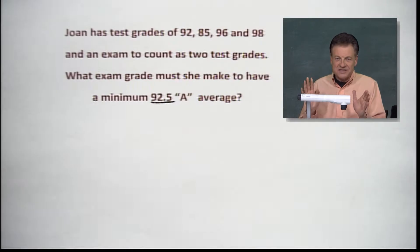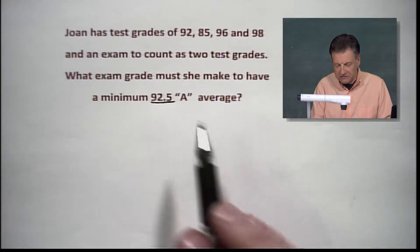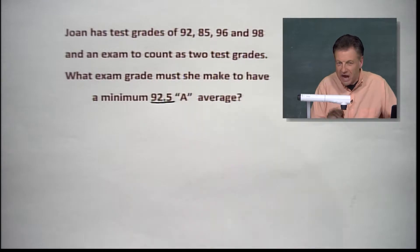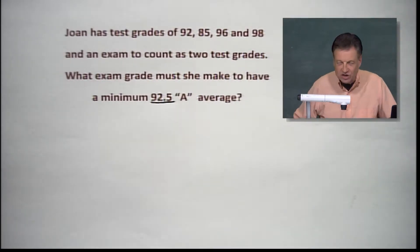Now, in the state of Tennessee, 93, yes sir, 93 is where that minimum A is for high school in the public school system. And if you have a 92.5, guess what? That rounds up and that's as close a call as you can make to get it rounded up to an A.